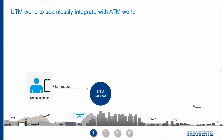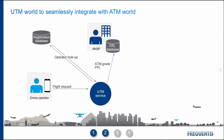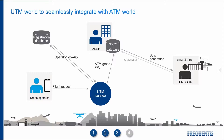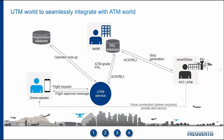The drone flight plan is converted by an Altitude Angel UTM integration service and processed in the Frequentis ComSoft CADIS ATS system in a standard DOC44-44 compliant format. CADIS ATS is the interface between UTM and ATM system components.